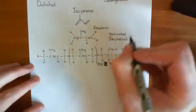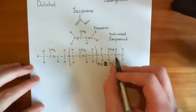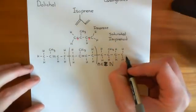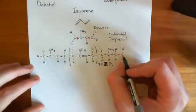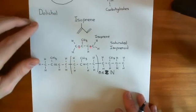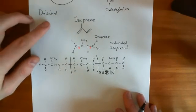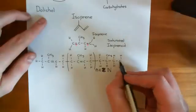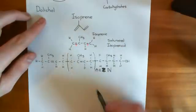A saturated isoprenoid group is being added on at the other end. And also, off this final carbon here, to actually make dolicol an alcohol and to make it earn its name, it needs to have an alcohol group. So we put our alcohol group here.